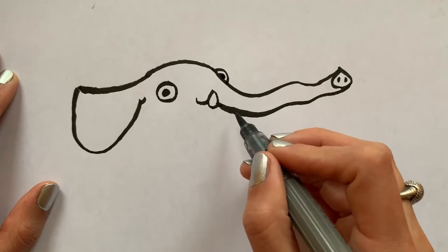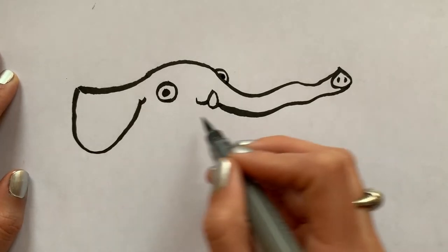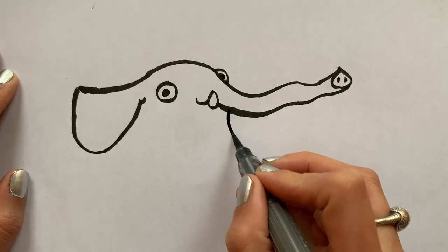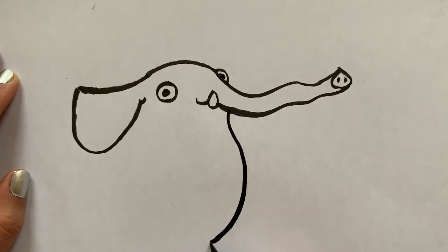Okay let's do the body. So her body is kind of like a big bean shape so I just draw her body. I curve it out like that.